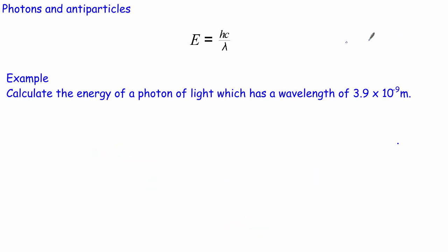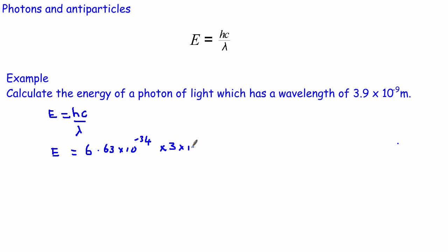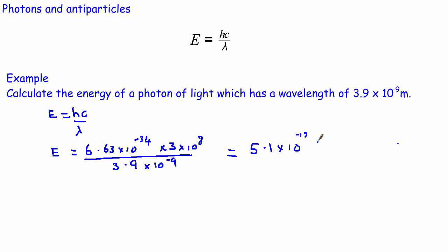Let's do one more example using E equals hc over lambda. To calculate the energy of a photon with a wavelength of 3.9 times 10 to the power of minus 9 metres: E equals 6.63 times 10 to the minus 34, times 3 times 10 to the 8, divided by 3.9 times 10 to the minus 9. This gives an answer of 5.1 times 10 to the power of minus 17 joules.